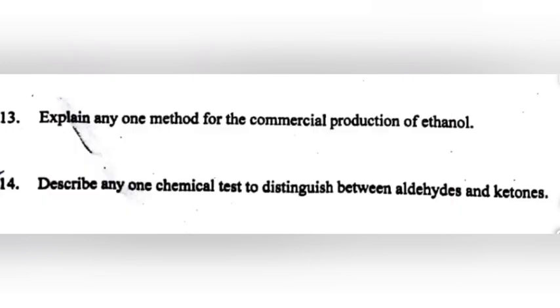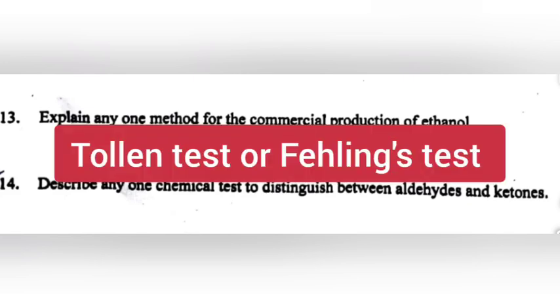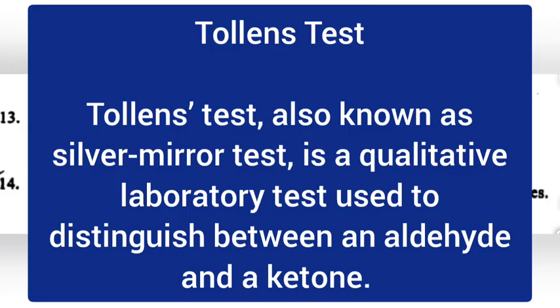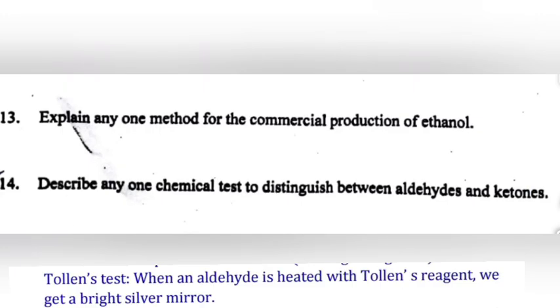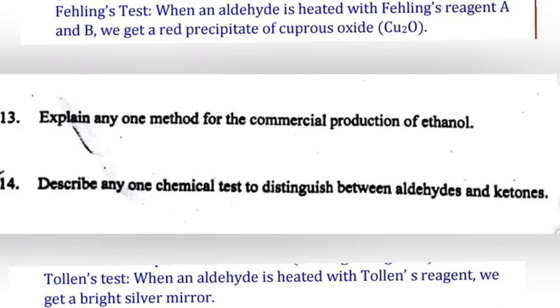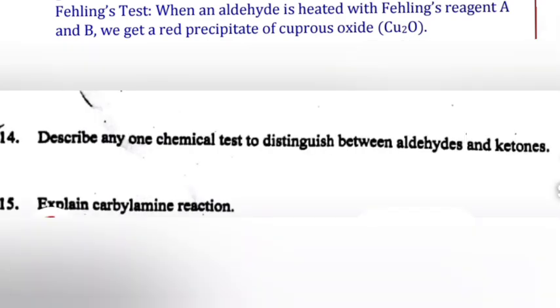Question 14: Describe any one chemical test to distinguish between aldehydes and ketones. Answer: Tollens test, also known as the silver mirror test, is a qualitative laboratory test used to distinguish between an aldehyde and a ketone. In Tollens test, an aldehyde is heated with Tollens reagent and we get a bright silver mirror. Or Fehling's test: when an aldehyde is heated with Fehling's reagent A and B, we get a red precipitate of cuprous oxide.